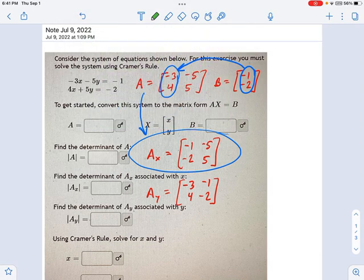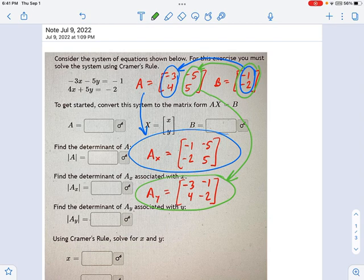And likewise, if you take the solution matrix, negative 1, negative 2, and you substitute it into the right column of the coefficient matrix, that brings you down here and we get AY. So you should know how to construct these two new matrices, AX and AY.